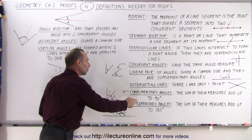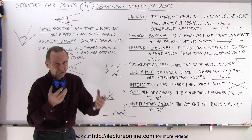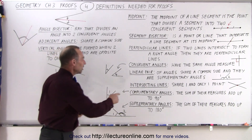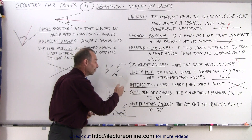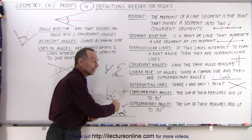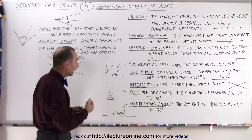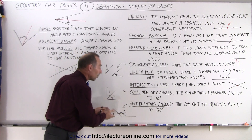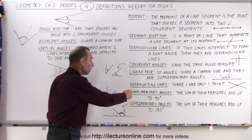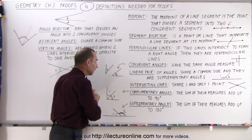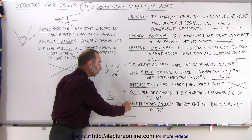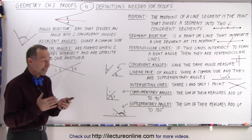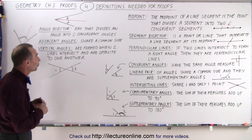The way you can tell the difference between complementary angles and supplementary angles, because we tend to confuse those two words: C for complementary comes before S in the alphabet, and therefore you can relate that to 90 degrees being smaller than 180 degrees. So the C, which comes first, is associated with 90 degrees, and the S, which comes after, is associated with 180 degrees. That's the way I keep track of those two names.